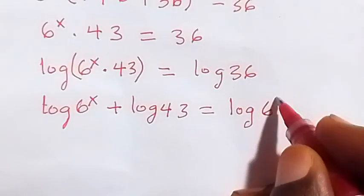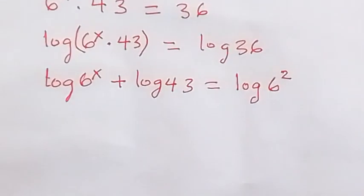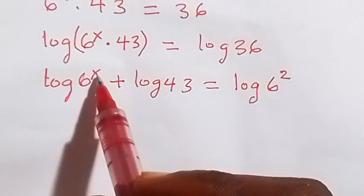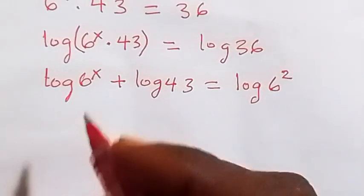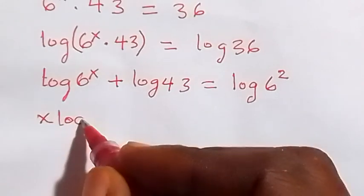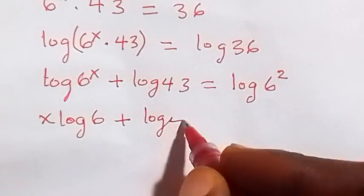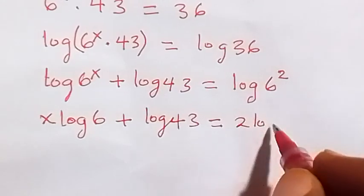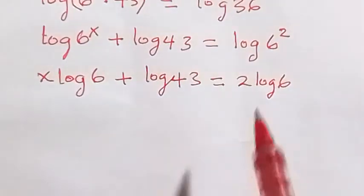Log 36 can be written as log 6 raised to power 2. From here, applying the power law of logarithms, this power of x can come to the front, likewise this power of 2. So this will give us x log 6, plus log 43, then equals to 2 log 6.